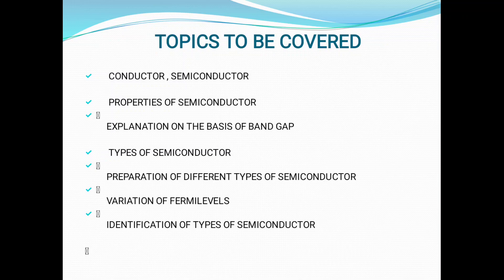We will also cover preparations of different types of semiconductors and how the Fermi level varies in a semiconductor. Before that, let me remind you: what is a Fermi level? It is the topmost energy level filled by electrons at zero degrees Kelvin, or it is the level which distinguishes the filled electron states from the unfilled electron states. Once a semiconductor is prepared, we must identify whether the given material is a conductor, insulator, or semiconductor, and if a semiconductor, whether it is N-type or P-type.